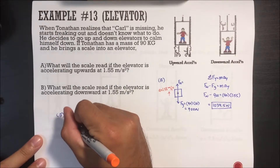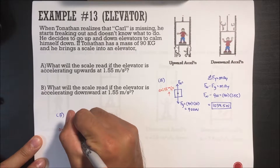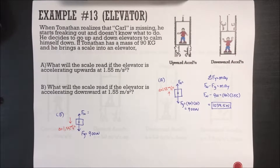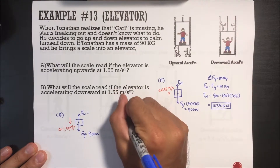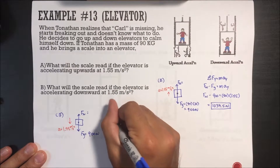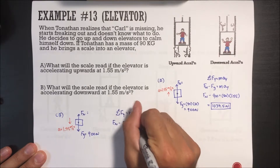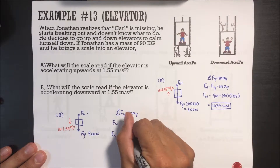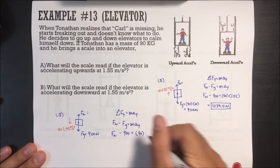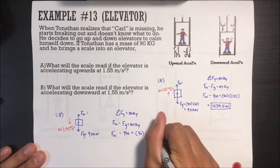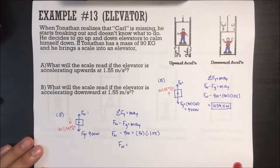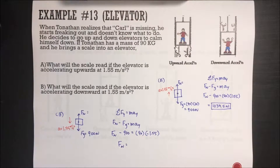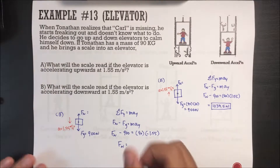Acceleration is going downward at 1.55 meters per second squared. Sum of all forces in Y equals mass times acceleration in Y. Force normal minus force of gravity equals mass times acceleration in Y. Force normal is what we're looking for. Force of gravity is 900, mass is 90, and this time the acceleration is negative 1.55. Doing the math, we get 760.5 newtons.